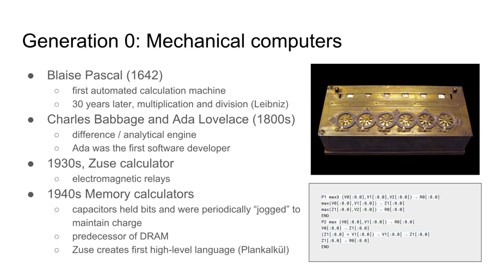Skipping forward to the 1800s, we remind ourselves of Charles Babbage and Ada Lovelace and the difference and analytical engines they worked on. Then in another big leap forward in time we get to the 1930s, where we start to approach the types of computers we think of today — at least electronic computers.